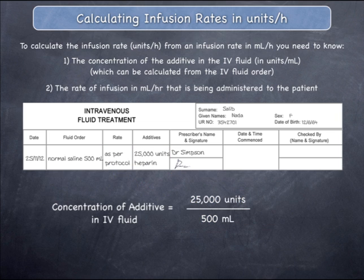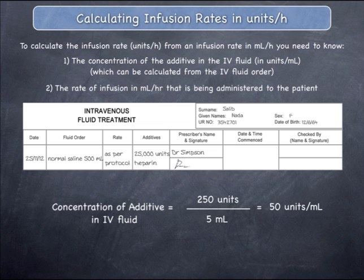The required calculation is shown. You can calculate this by applying the 10 rule to 25,000 over 500, by removing two zeros from the end of each number. This gives 250 over 5, which is 250 divided by 5.